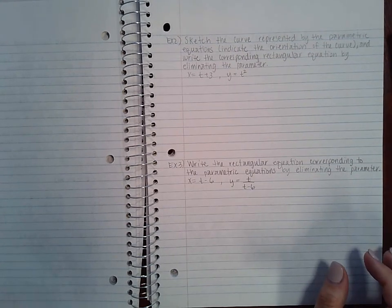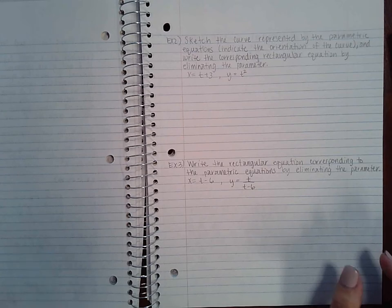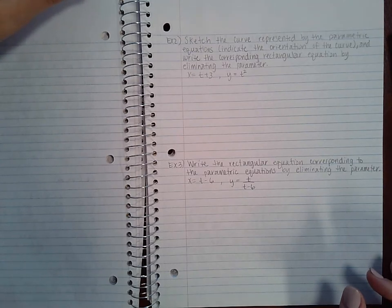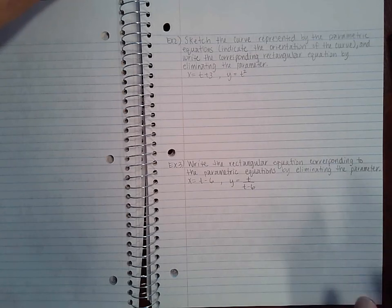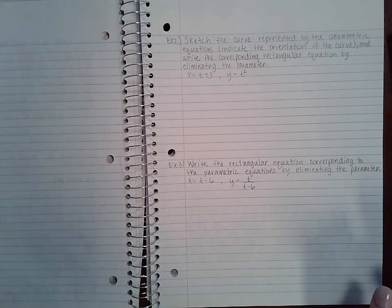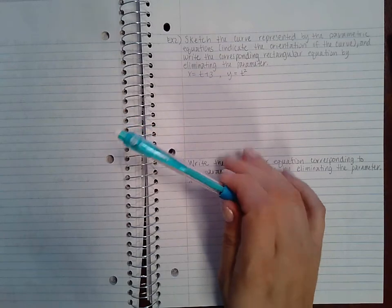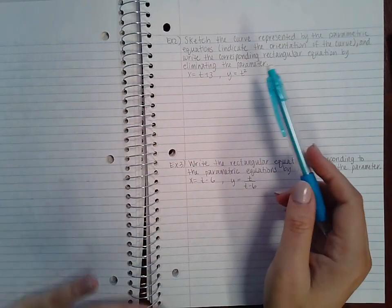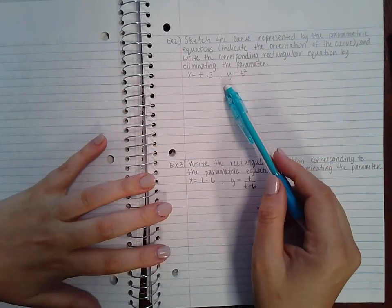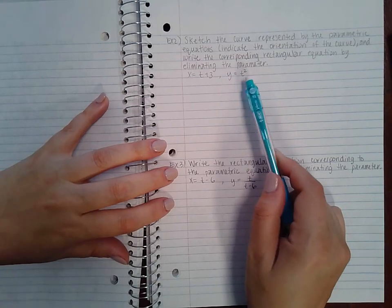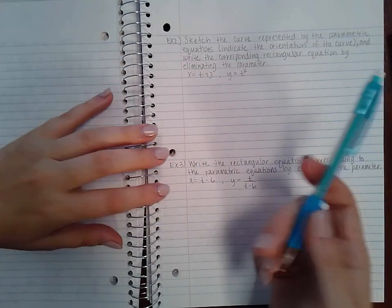This video is 10.2 part 2. Example 2 says sketch the curve represented by the parametric equations, indicate the orientation of the curve, and write the corresponding rectangular equation by eliminating the parameter. So it's the same directions as before, we just have different kind of functions. These are not both linear equations this time, so the graph is probably not going to be a line. I'm guessing it might look more like a parabola, but we'll find out as we go.